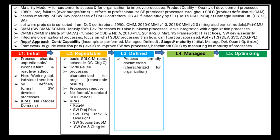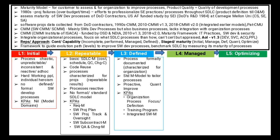At the Defined level, processes are now formally documented — something not done at previous levels. The processes are now characterized for the organization rather than for a specific project, and there is a standard model which can tailor the process according to a specific project. The processes are now proactive and quantitatively improved. The key process areas are: Organization Process Focus, Organization Process Definition, Training Program, Integrated Software Management, Software Product Management, Intergroup Coordination, and Peer Reviews.